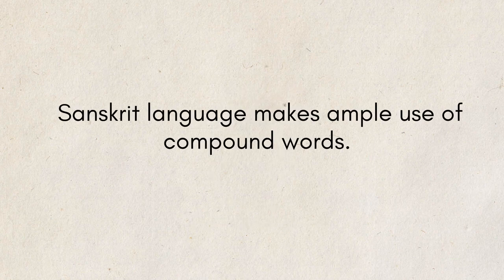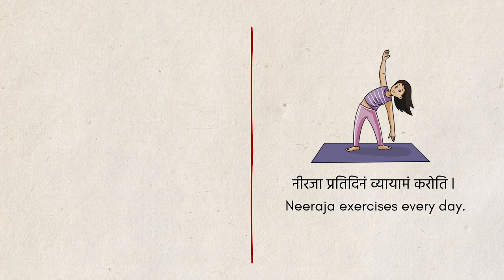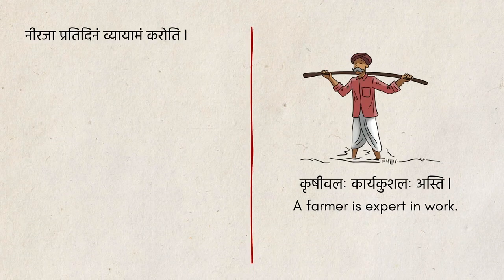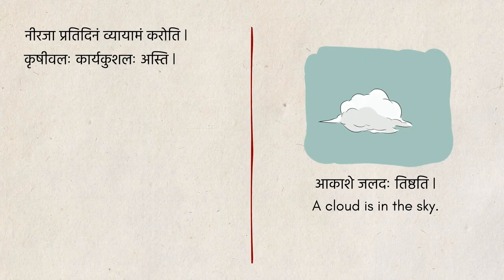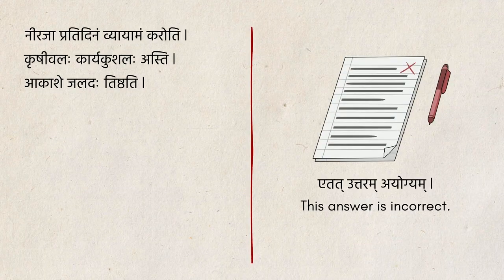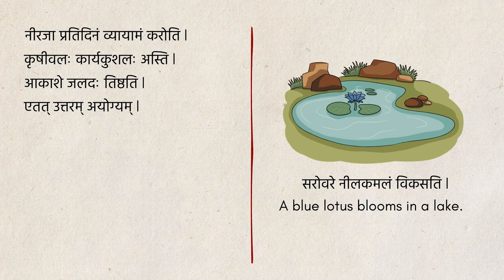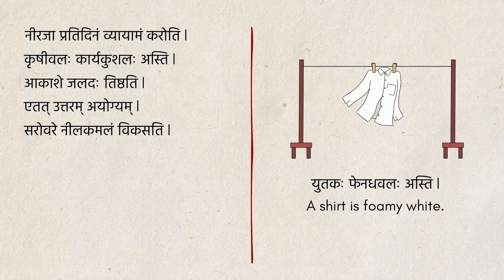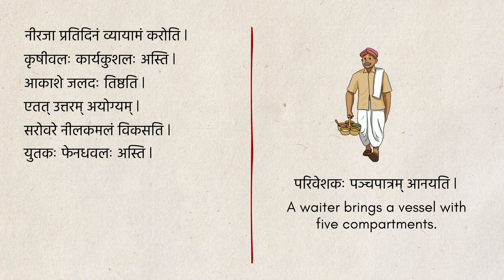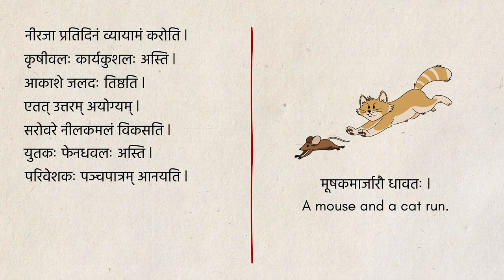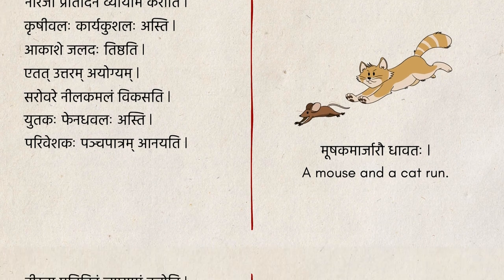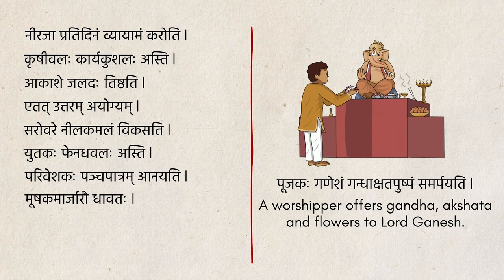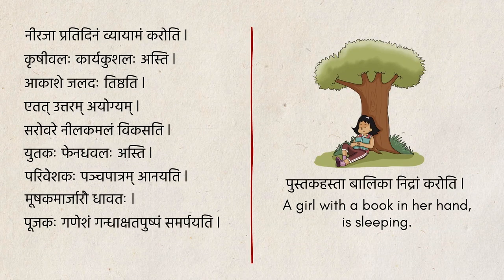Sanskrit language makes ample use of compound words. Let's see some examples: नीरजा प्रतिदिनम् व्यायामं करोती। क्रुशीवलह कार्यकुशलह अस्ती। आकाशे जलदह तिष्ठती। एतत उत्तरम अयोग्यम। सरोवरे नीलकमलं विकसती। युतक फेनधवलह अस्ती। परिवेश पंचपात्रम आनयती। मूशक मार्जारव धावतह। पूजकह गणेशं गंधाक्षत पुष्पं समर्पयती। पुस्तकहस्ता बालिका निद्राम करोती।